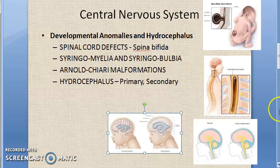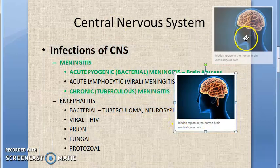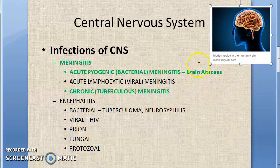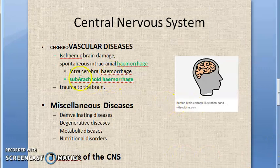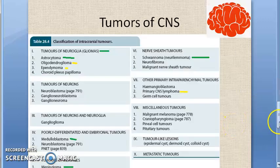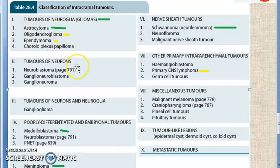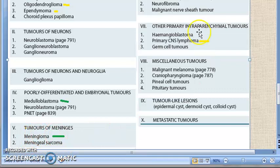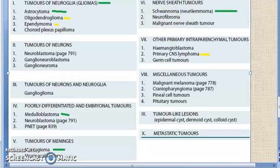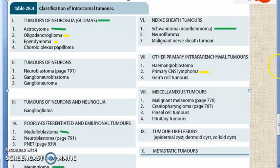For the exam, you should know the developmental anomalies and hydrocephalus — just the names. Under infections of the CNS, meningitis is very important and has been asked in the exam; brain abscess may also come up. Subarachnoid hemorrhage is important for the exam. For CNS tumors, the important ones are glioma, astrocytoma, medulloblastoma, meningioma, and schwannoma — also called neurilemmoma. Whatever is marked in green is important for the exam.